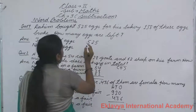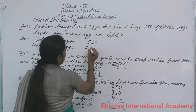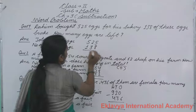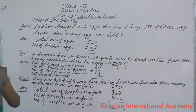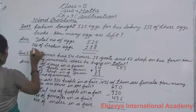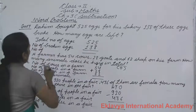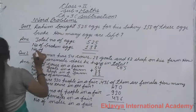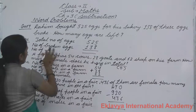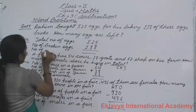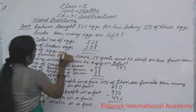Number of broken eggs: 138. And number of eggs left.